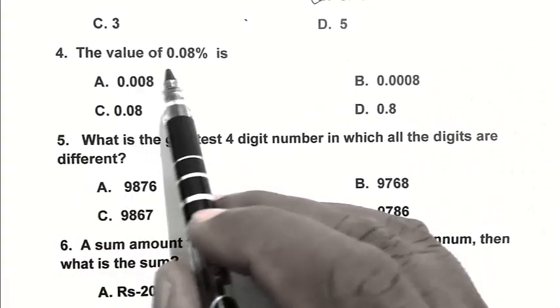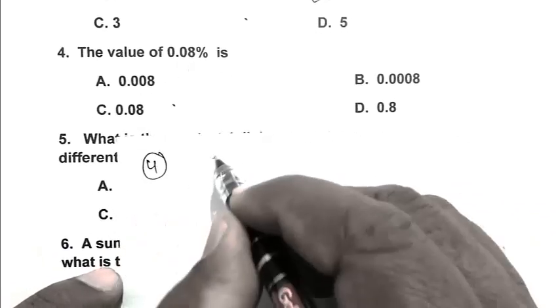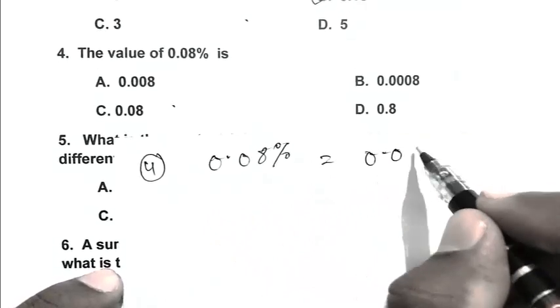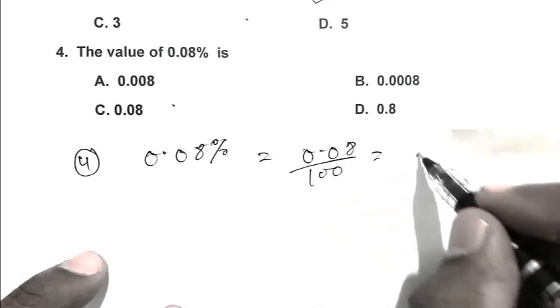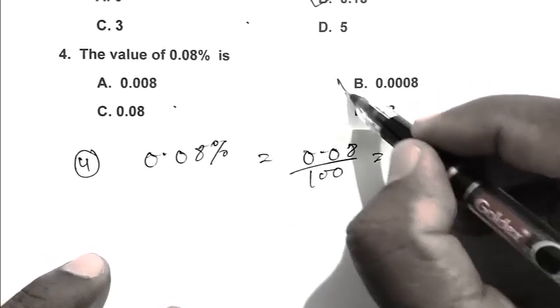Question number 4. The value of 0.08%. The number is 0.08%, so that is 0.08 upon 100. So it becomes 0.0008. So B is the right answer.